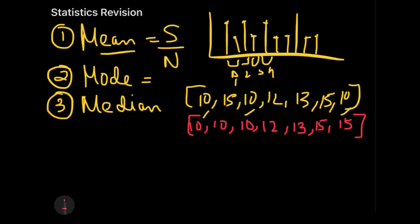Our example has seven elements — that's odd, which is easy. If you've done ranking questions in logical reasoning, you know that an item is in the middle when its rank from the left equals its rank from the right. Here, 12 is fourth from the left and fourth from the right, so 12 is the middle number. The median of this range is 12.